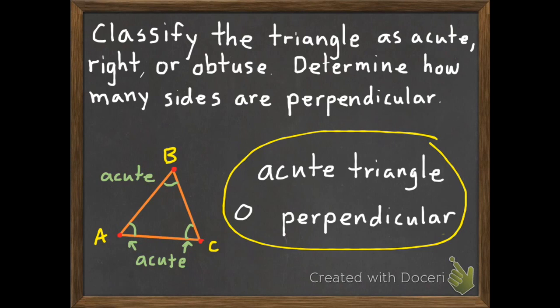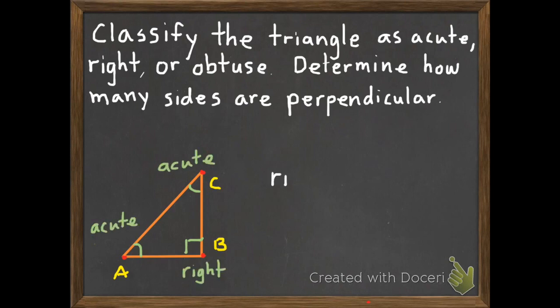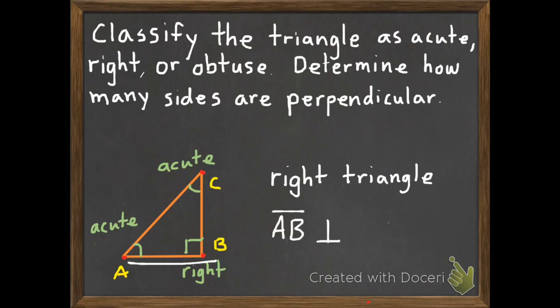So we are ready for your second problem to do with me. Is this triangle acute, right, or obtuse? And how many sides are perpendicular? We have an acute, an acute, and a right angle. Since we have a right angle, this is a right triangle. And since it's a right triangle, we have two sides that are perpendicular — line segment AB and line segment BC are perpendicular.